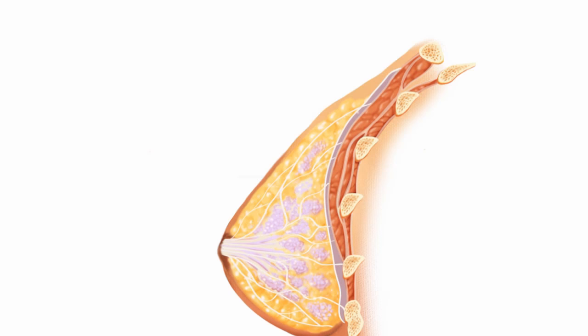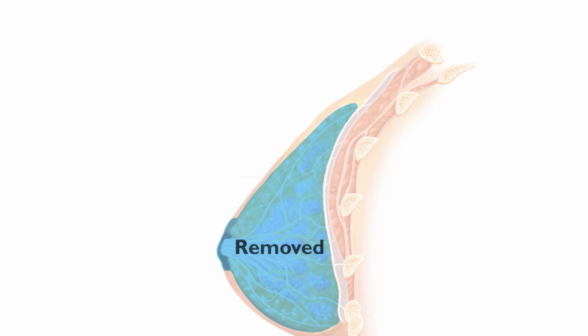During a skin-sparing mastectomy, the breast tissue is removed from inside the breast, keeping the outer skin of the breast intact.